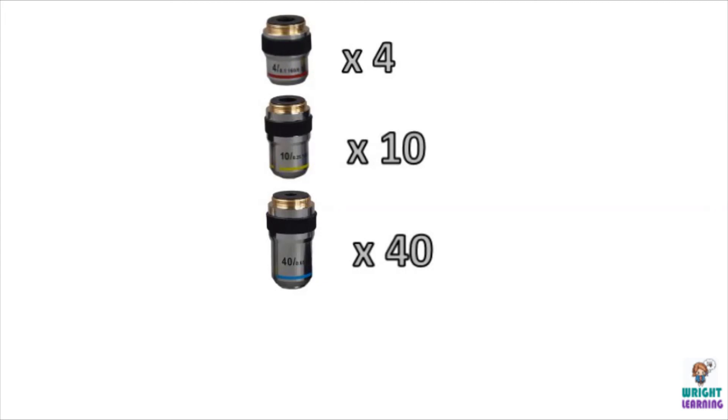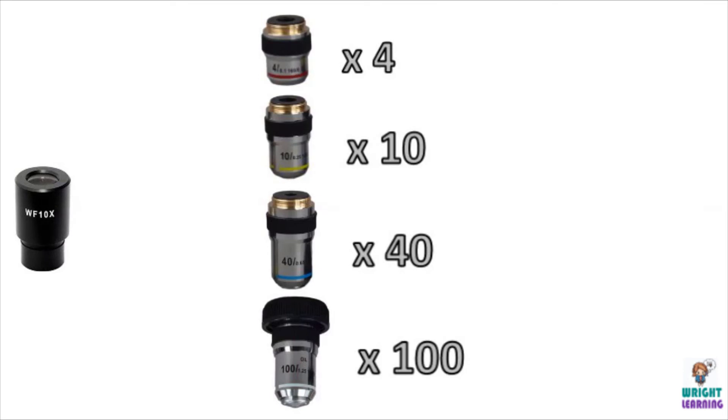The most powerful objective lens is the longest, and has a magnification power of 100. That being said, you need to remember that we're also viewing the sample through the eyepiece, which has a magnification power of 10.